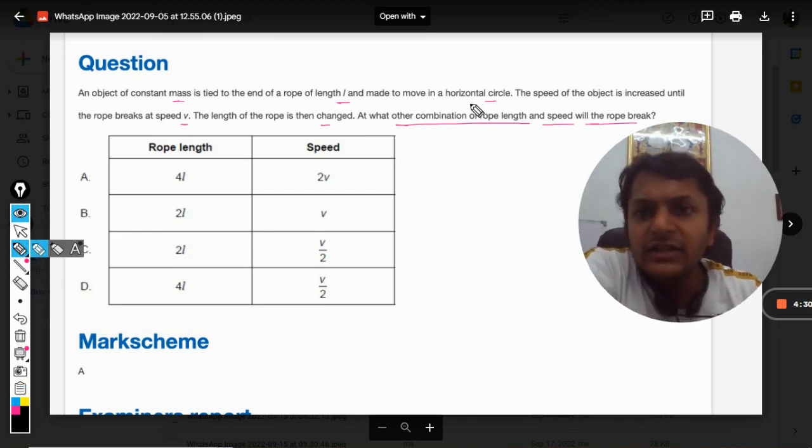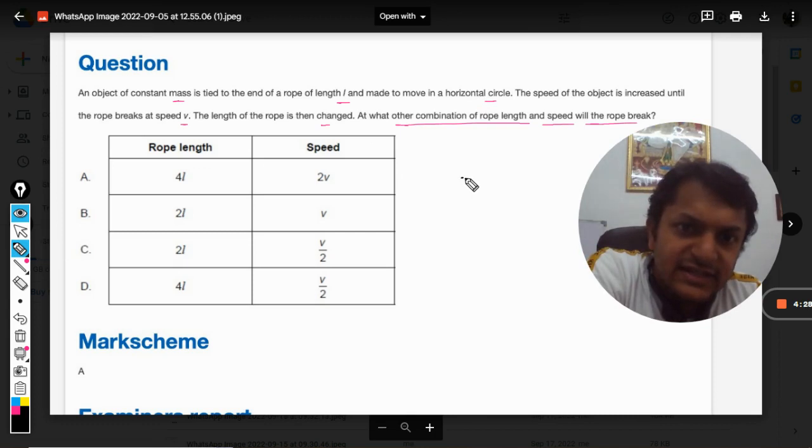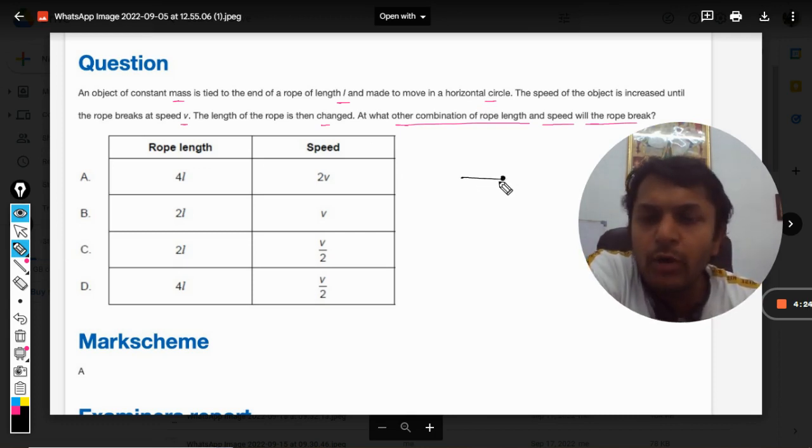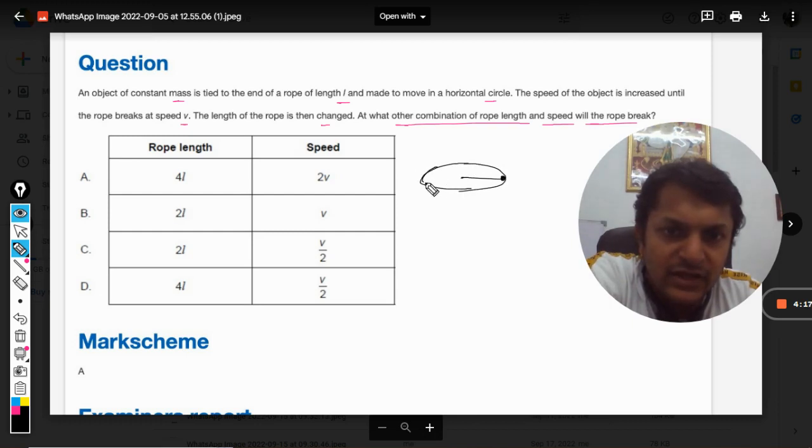So let's see that according to the question, there is a rope and there is a stone or a bob or a mass that is tied at the end of the rope. This rope is given a rotation like this, so when it rotates there is a centrifugal force which is mv²/r that is acting.